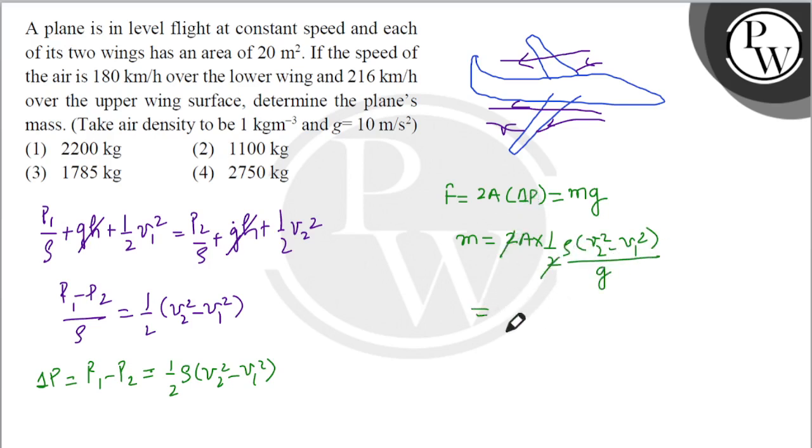The two cancels, giving m = (Aρ/g)(v2² - v1²).